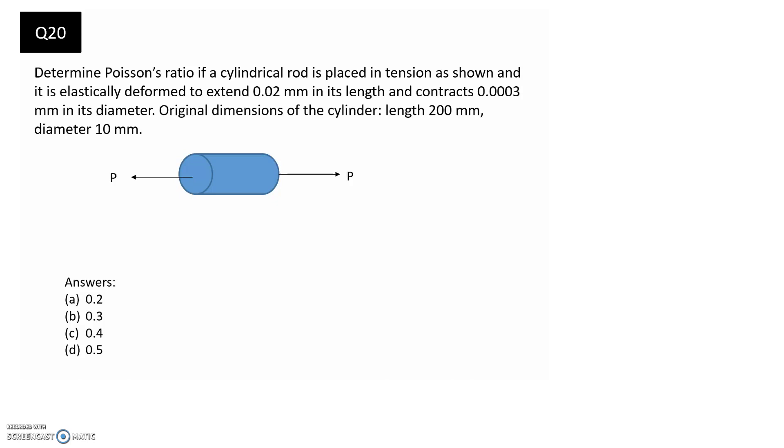The first thing I'm going to do is just quickly jot down all the information. We're told that we're trying to find Poisson's ratio, so that's the unknown. We're told that it's going to extend 0.02mm, so that's going to be the change in its length. It's at the same time contracting in its diameter. And I'm going to make this a negative value. Remember that when something is a positive change in a dimension, that means it's getting longer, and when it's a negative change in the dimension, that means it's getting shorter. And original dimensions of the cylinder are given, so that's going to be L₀ for the length and D₀ for the diameter.